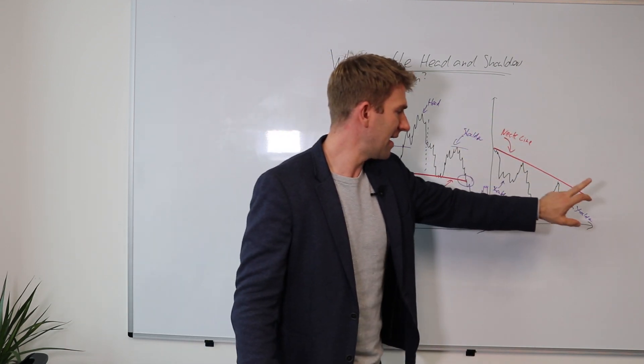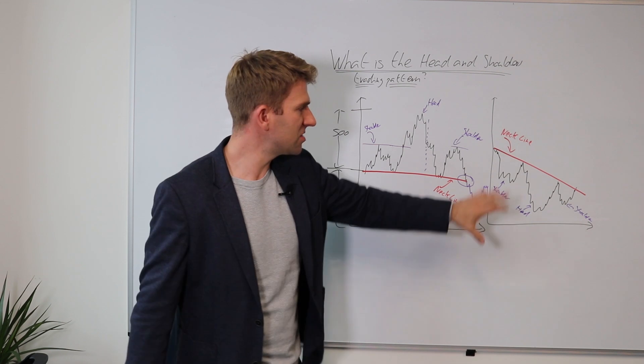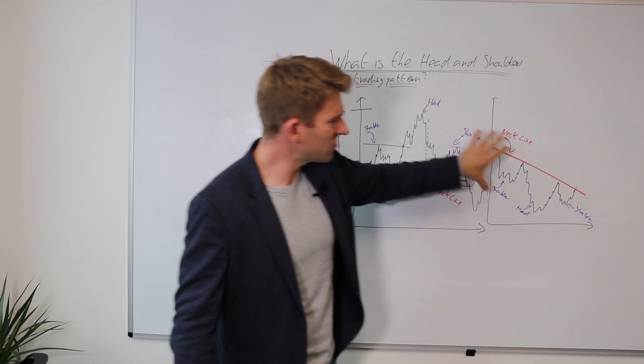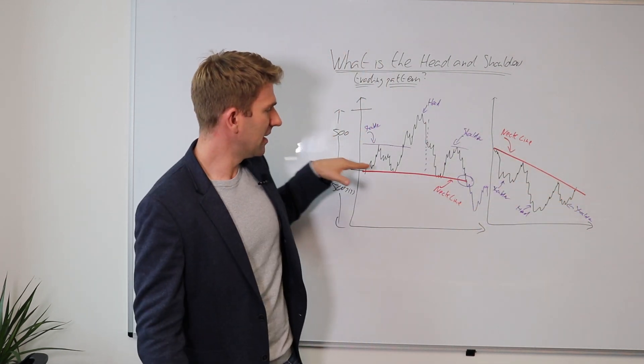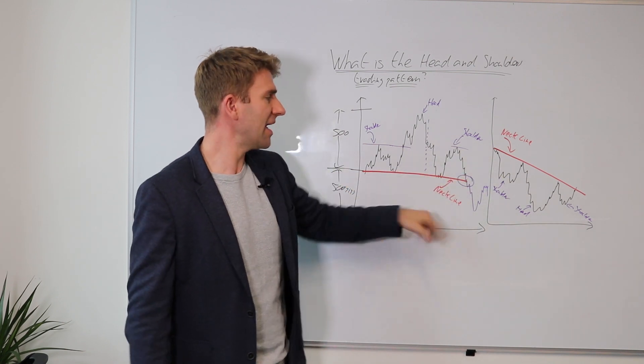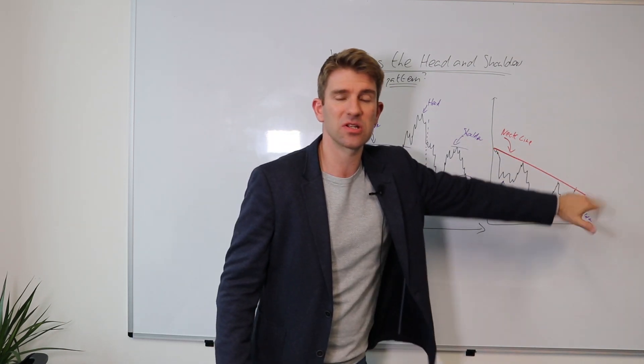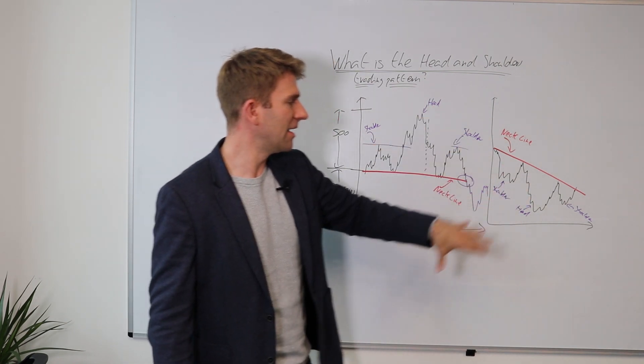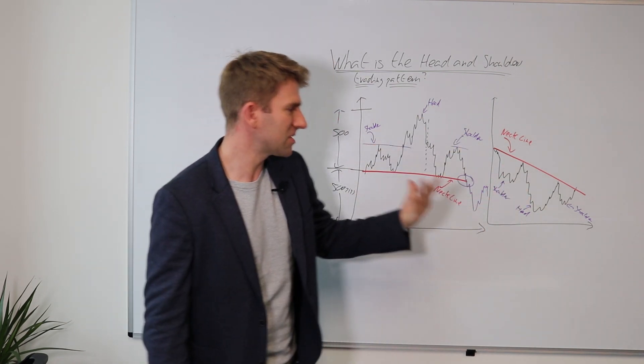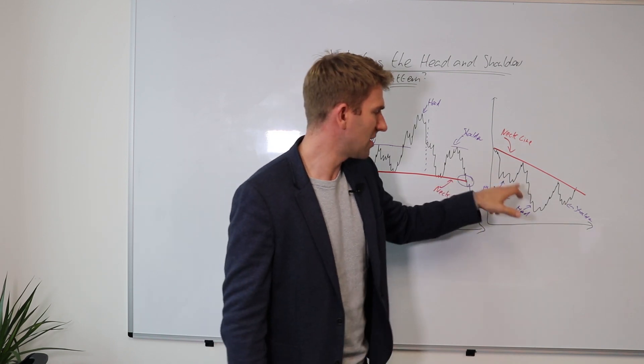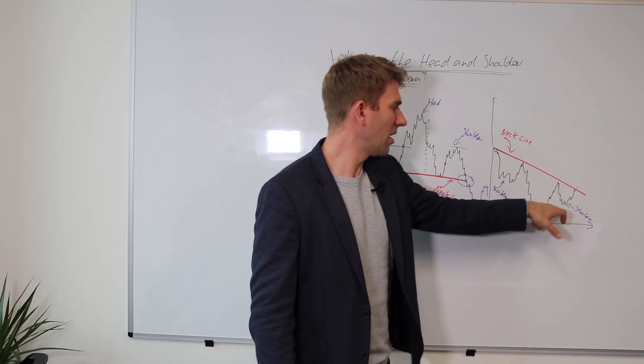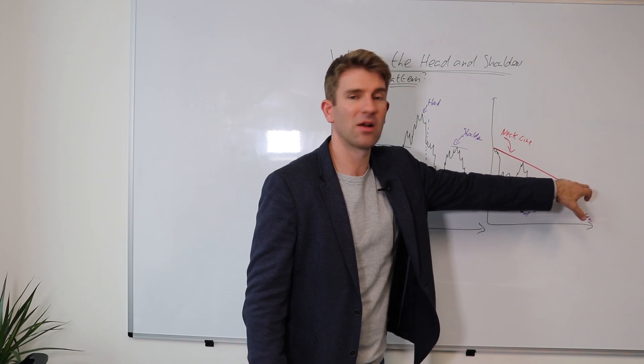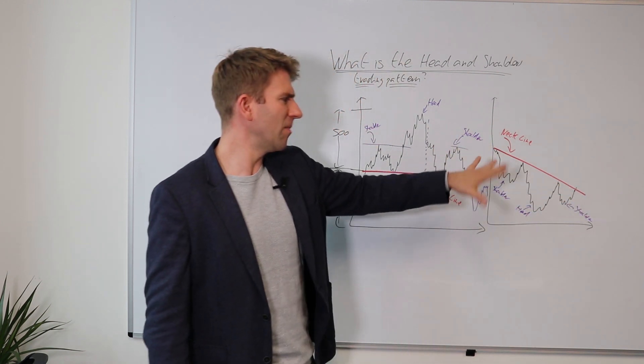By the way, the inverse head and shoulder is exactly the same - you've got the shoulder, the head, shoulder, inverse for obvious reasons. The reason I've drawn this slanted is it doesn't have to be a complete parallel line to the x-axis. You can have a slanted neckline, and again with the inverse or the normal the same rules apply. It just means there's a different type setup, slightly different setup. You've still got these kind of higher lows, and when you break the neckline that's when you're taking the trade.